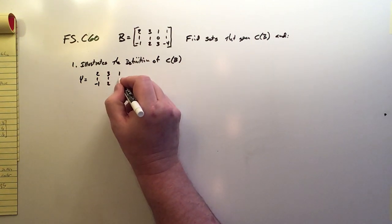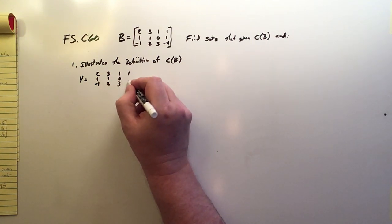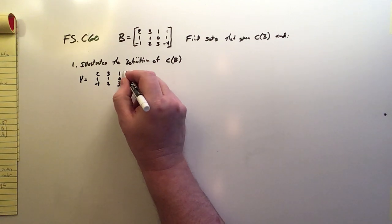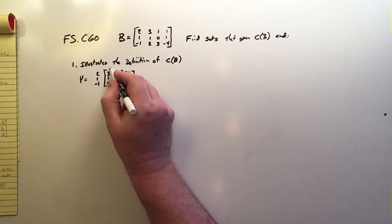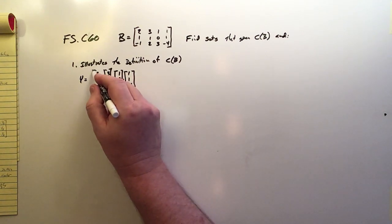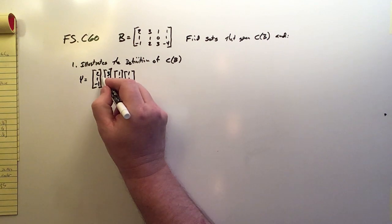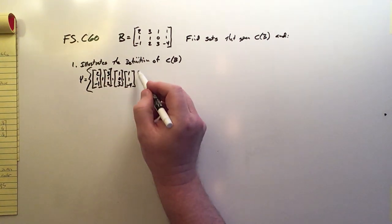3, 1, 2, 1, 0, 3, and 1, 1, negative 4, and that will be vector set Y, and Y will equal the column space of B, because it is the columns of B, so this is as simple as it gets, but of course, it's messy.